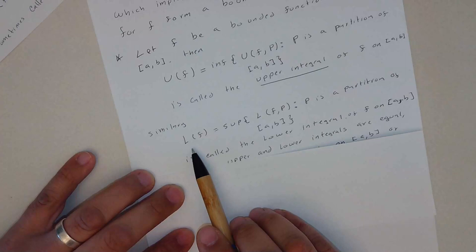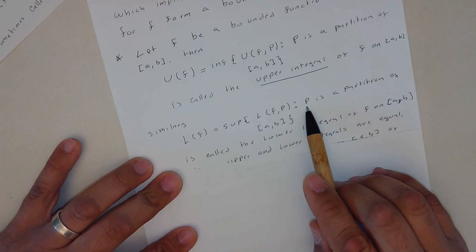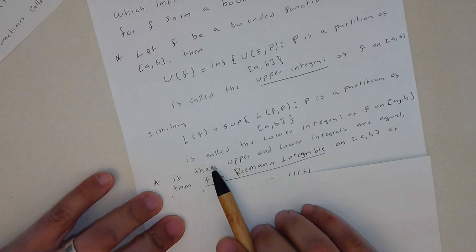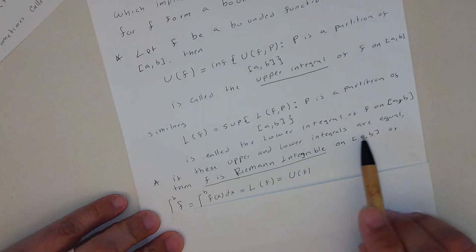Similarly, L will be the supremum value, the maximum value of all the possible lower sums for any partition P in between a and b. This is called the lower integral of f on [a,b].